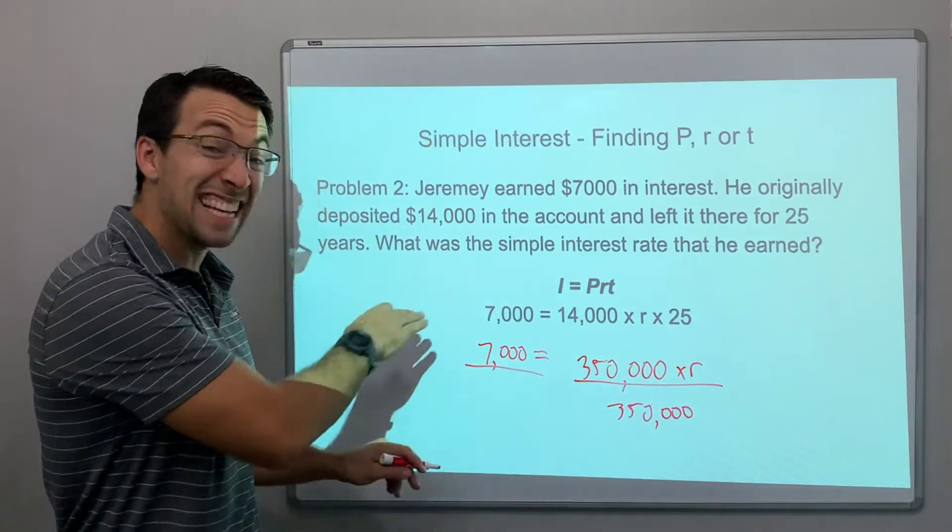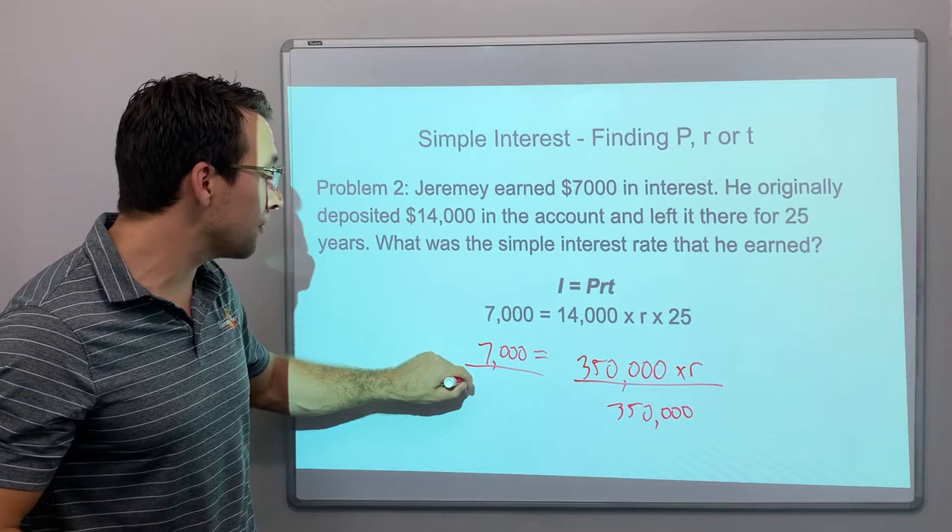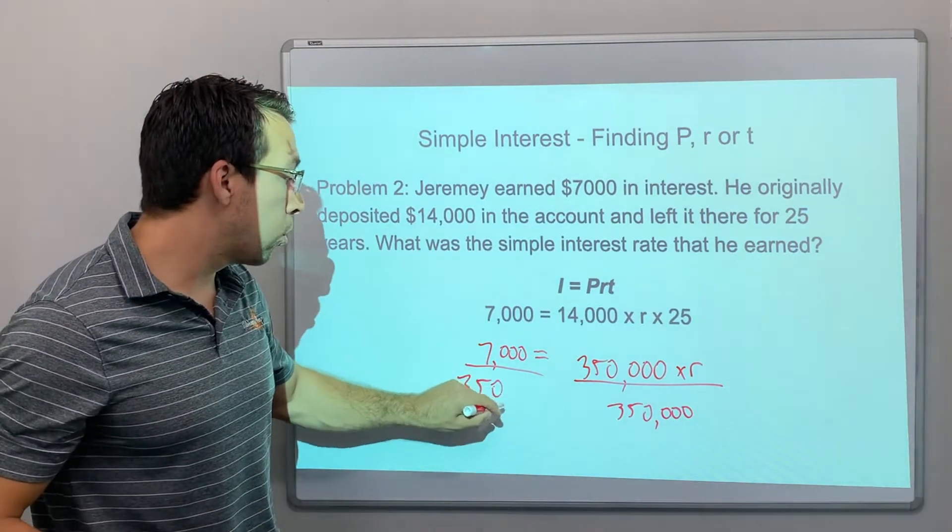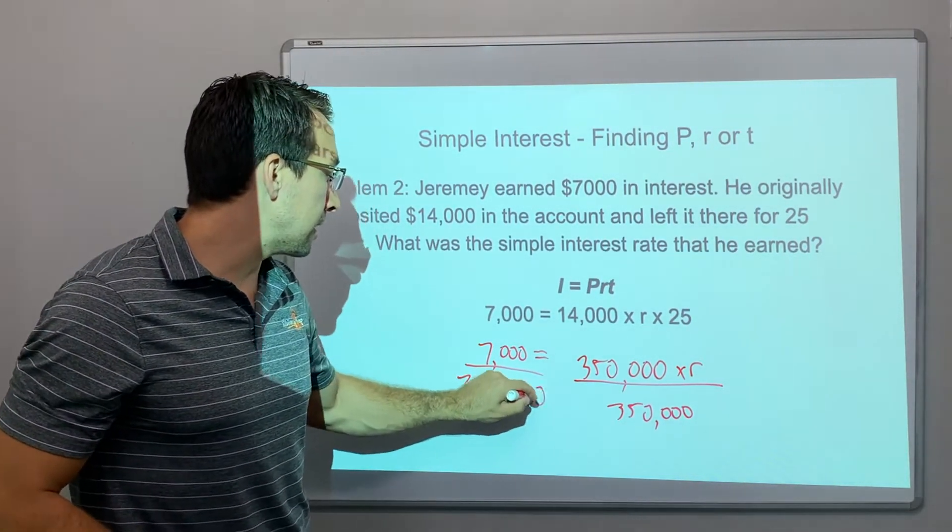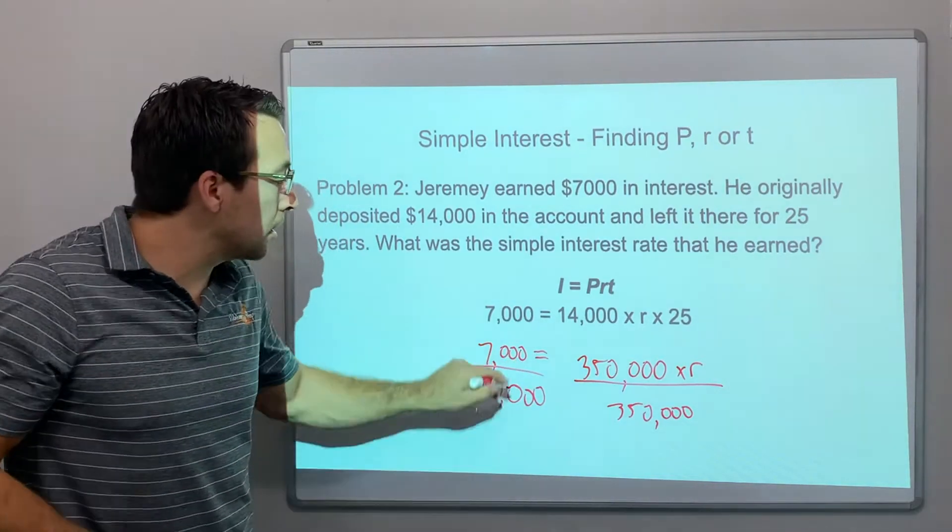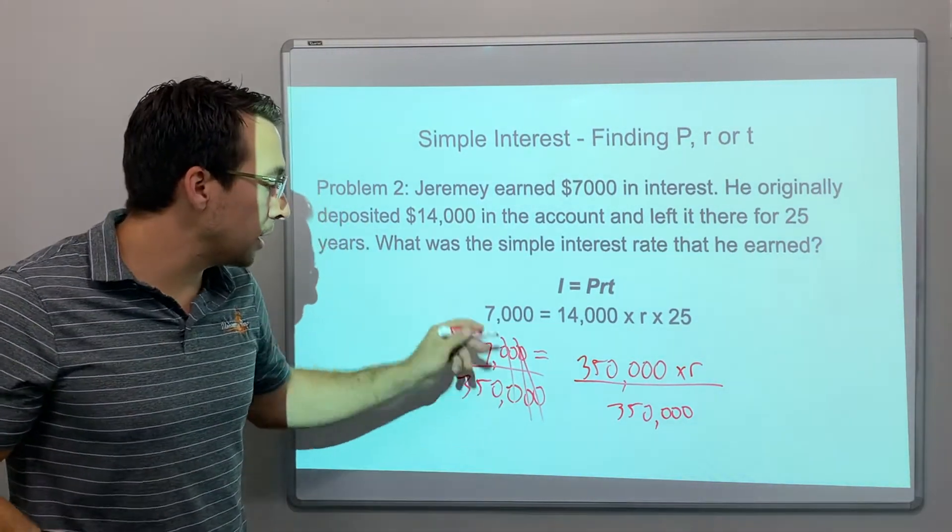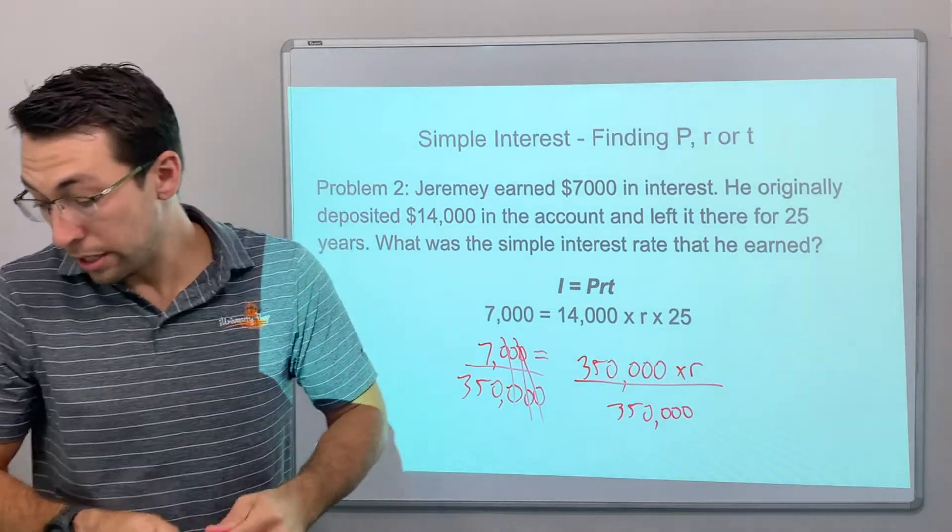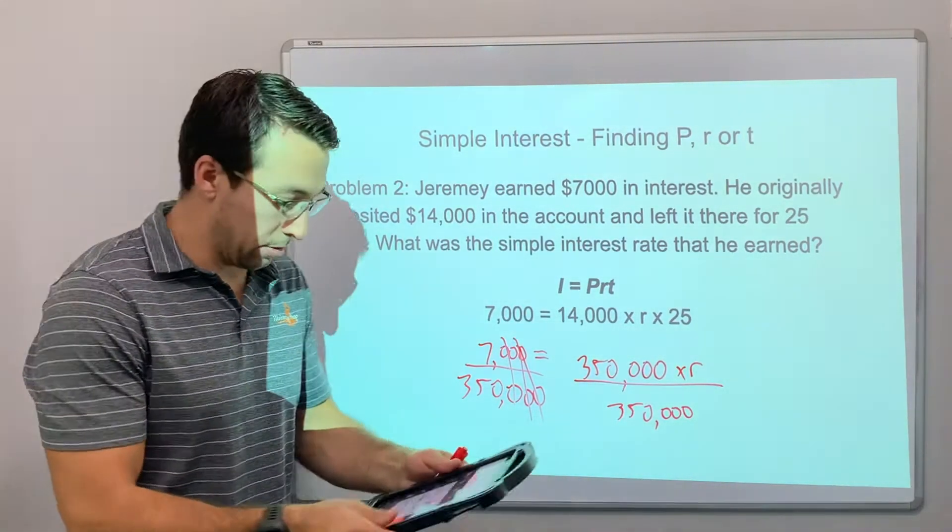So what is 7,000 divided by 350,000? That is tough. And check this out, we know that we can mark off zeros, or we could use our calculator. So let's do that.